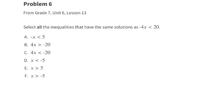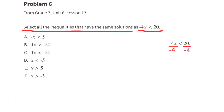Problem number six from 7th grade unit 6 lesson 13: select all the inequalities that have the same solution as negative 4x is less than 20. When we divide both sides by negative 4, we switch the inequality sign, giving x is greater than negative 5.